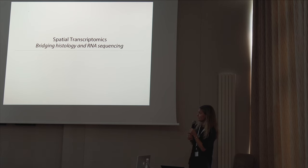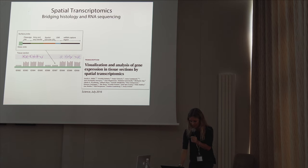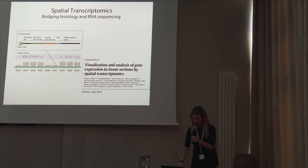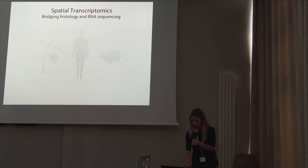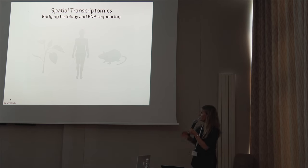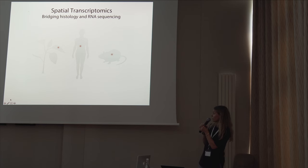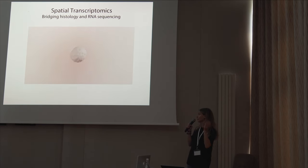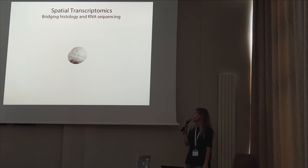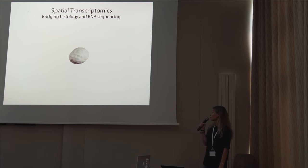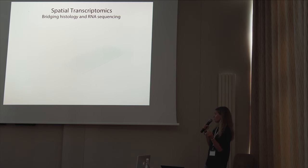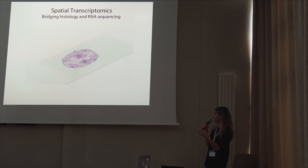Let's dig deeper into the spatial transcriptomics technology. This technology was published in July 2016. I will show you a short movie describing the overall process. Basically you can take any type of tissue — here a cancer or tumor sample. We cryo-section that into very thin slices, and these slices are placed on barcoded glass slides. We stain the tissue to reveal the morphology and histology.